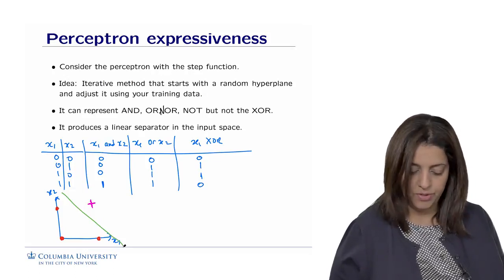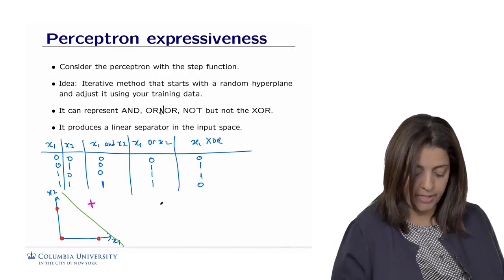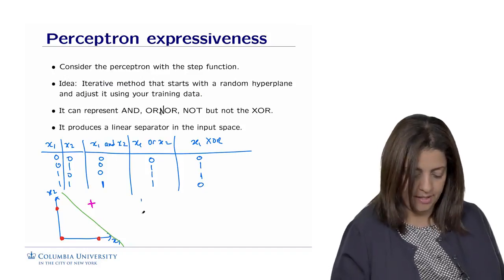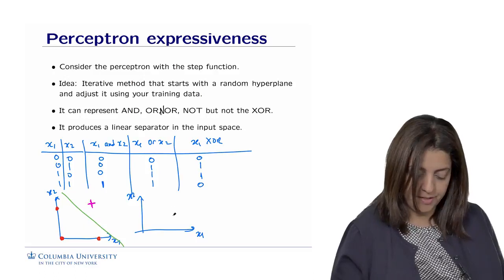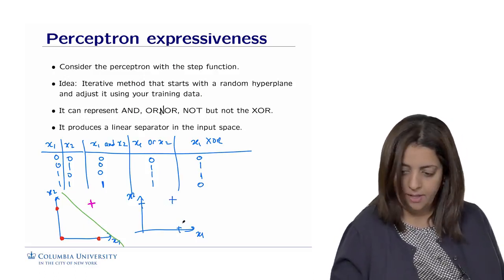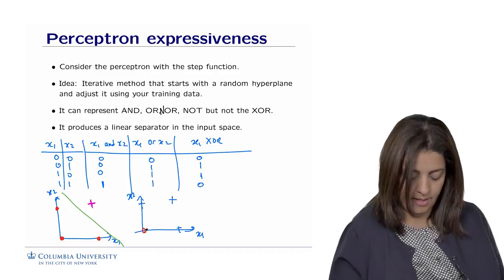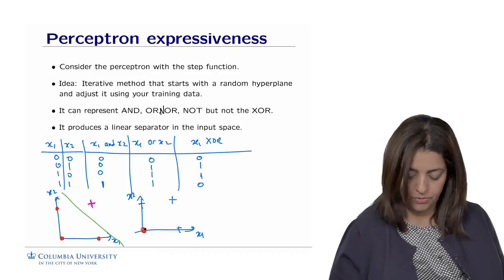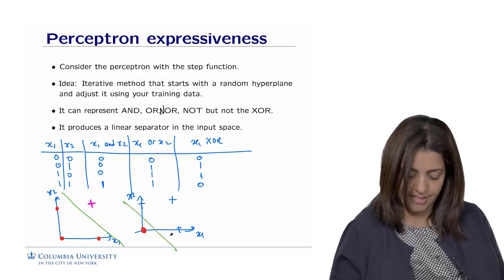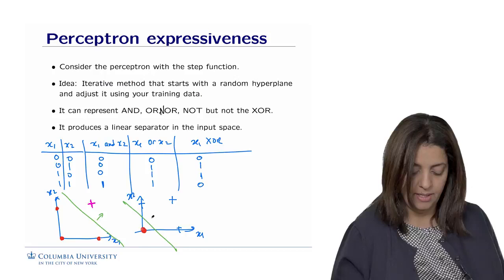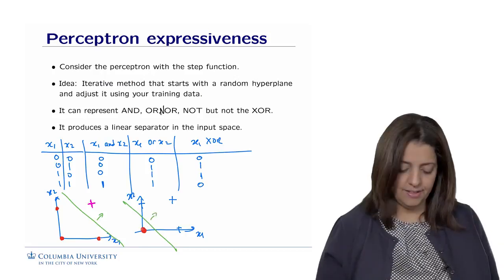Same thing would happen with the OR, in which we would have data that looks like this, x1, x2. In this case, everything would be actually 1 except for 0,0. This point here would be a negative point or 0. And the hyperplane in this case would be this line that separates the positive side from the negative side. So the positive side would be on this side.